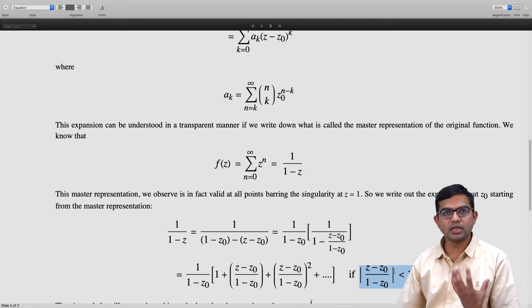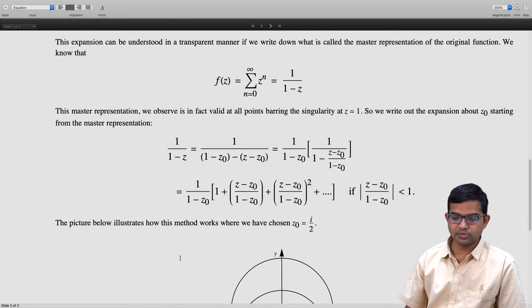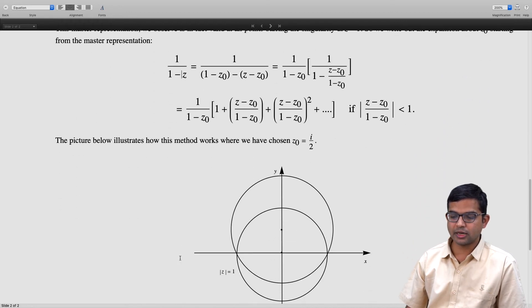We are working with the same function really, but now the validity has changed to a different region. This picture below illustrates what has happened. Initially we started with the circle of convergence which is basically the circle defined by mod z equal to one.